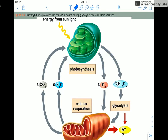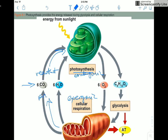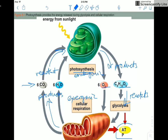Here's one more graphic that gives you in picture form what we just looked at. Here's photosynthesis, which is our endergonic reaction, and cellular respiration, which is an exergonic reaction. Carbon dioxide and water are reactants for photosynthesis but also the products of cellular respiration. On the other side, oxygen and glucose are the products of photosynthesis and the reactants for cellular respiration.